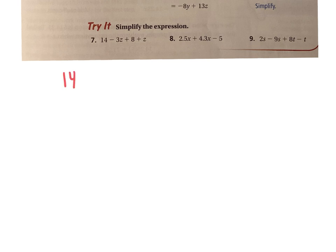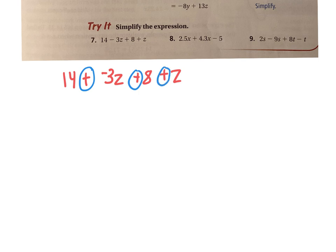Let's look at number 7. If I take 14, and it's minus 3z, I'm going to make that into a positive — plus a negative 3z — plus 8, plus z. By doing that, I have all of these adding. Now I'm going to list my terms: 14, negative 3z, 8, and z.